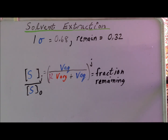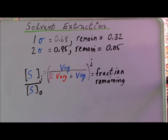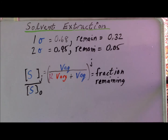In statistics, if we have a normal distribution, we expect that 0.68 of the population will be within one standard deviation of the mean. So to find the amount that is remaining — since this is the amount that is extracted — the amount remaining is going to be one minus this value, which would give us 0.32 after one extraction. If we have a normal distribution, we expect that within two standard deviations of the mean, we should find 95% of the population, 0.95. Therefore, the amount remaining, since 0.95 would have been extracted into the organic phase, would be one minus this value, which would be 0.05.